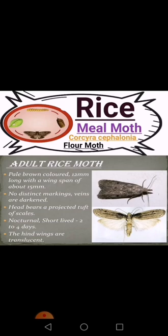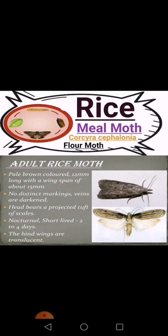Now, some characters of the adult rice meal moth. The adult is pale brown in color, usually 12 mm long with a wingspan of about 15 mm, with no distinct markings on the body. The wings are darkened in color. The head appears as a projected tuft of scales.